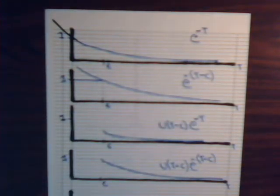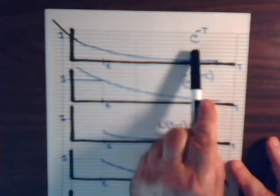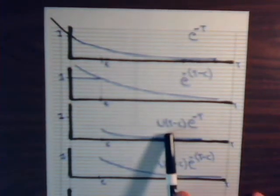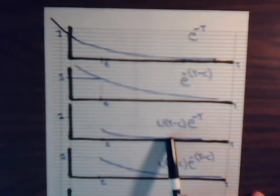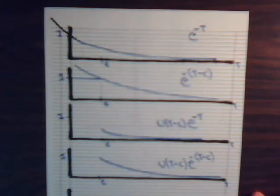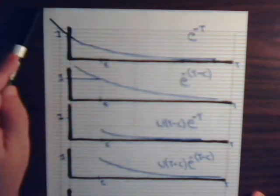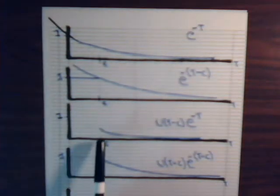Now, let's take this and multiply it by u of t minus c. Now, this is always zero until we reach the point where t equals c, that equals one. So if we write this function like this, then that's going to obliterate this part of the curve of e to the minus t. And what we have left is just that segment then.